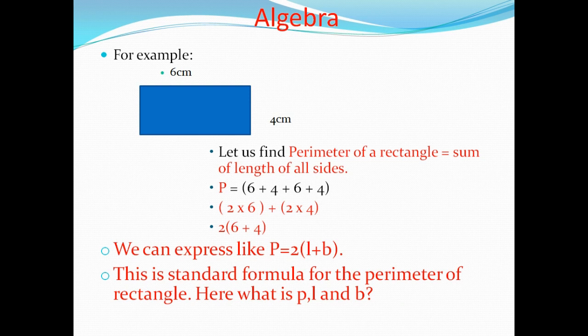Now if you look at the formula, we can express this as P = 2(L + B). This is the standard formula for the perimeter of a rectangle. We are using P = 2 times (L + B). This is the standard formula for the perimeter of a rectangle, and we made it by using Algebra.